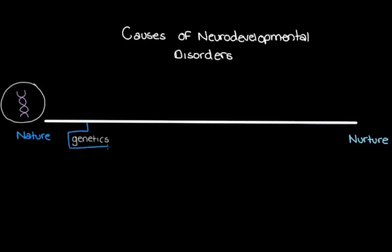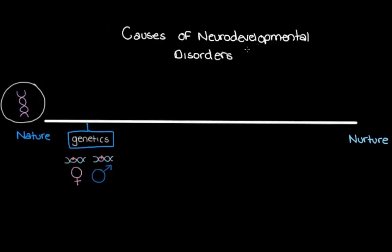Changes in our DNA — like if our mom or dad, or maybe both of them, pass on mutated genes — is one of the possible events that can lead to a neurodevelopmental disorder. We're looking at broad causes of neurodevelopmental disorders in general, and we'll look at some specific examples shortly, just to get a sense of the overarching causes.